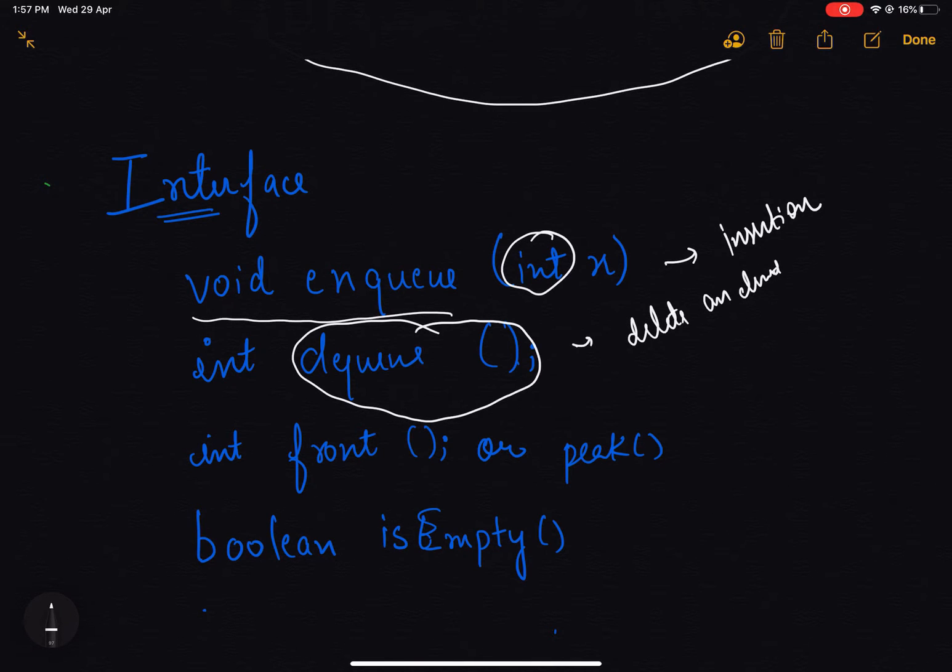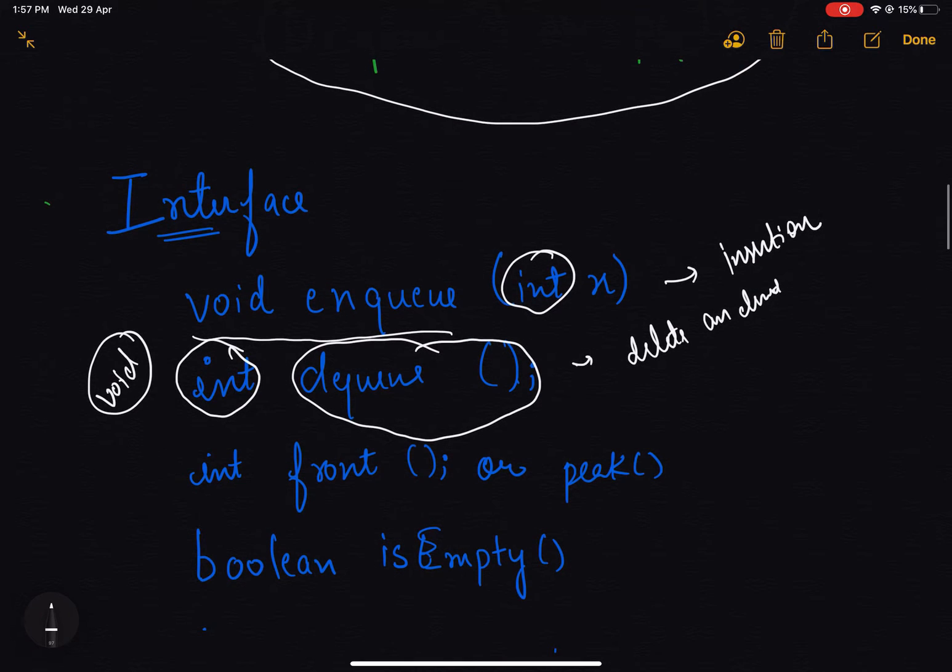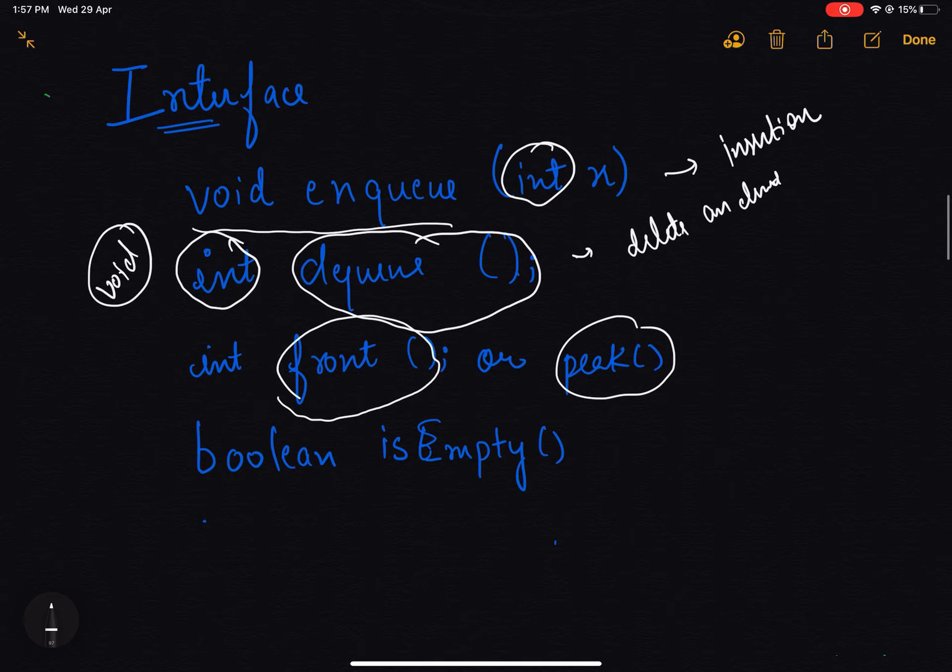The return type symbolizes the element that I deleted. It solely depends upon the implementation whether we want to return that element or not—we can keep it as void as well. Also, what sort of other things may we need from the queue? What is the element present at the front, or we can say peek, and is my queue empty or not?